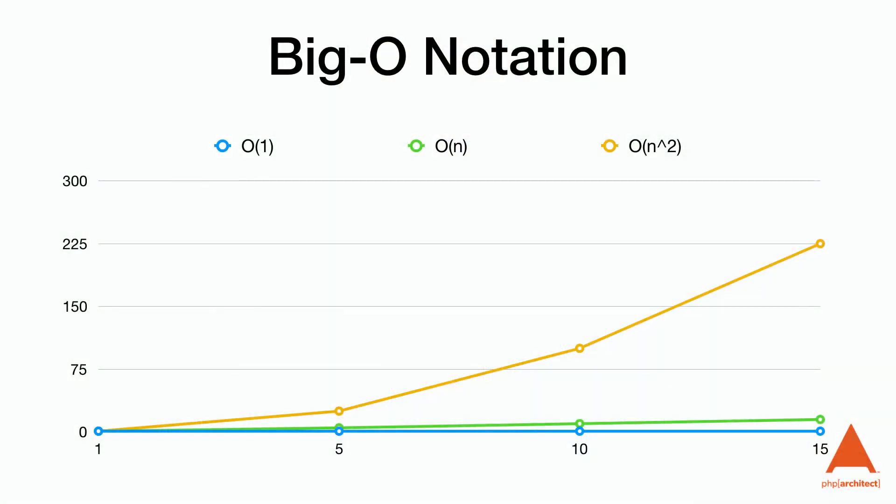Each of these data structures have different performance characteristics. We'll use what's known as Big O notation to describe the performance of the data structure with different processes like adding elements, deleting elements, and searching for a specific element as the number of elements gets very large. It can range from O(1), indicating it takes the same amount of time regardless of how many elements exist, to O(n), indicating it increases linearly as the number of elements increases, all the way up to O(n²), which is something we need to strive to prevent.